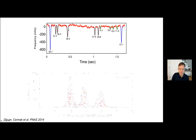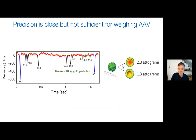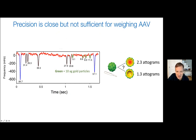Could we resolve a virus like the AAV? The answer is almost, but not quite. The 10-attogram gold particles are visible, but if we wanted to resolve a 2-attogram virus, we'd have to get lucky on a very quiet period. We realistically couldn't, and certainly couldn't detect a 1-attogram difference between full and empty capsids.